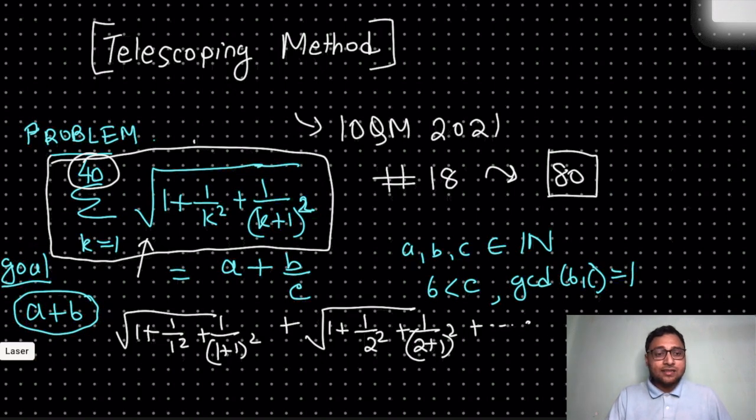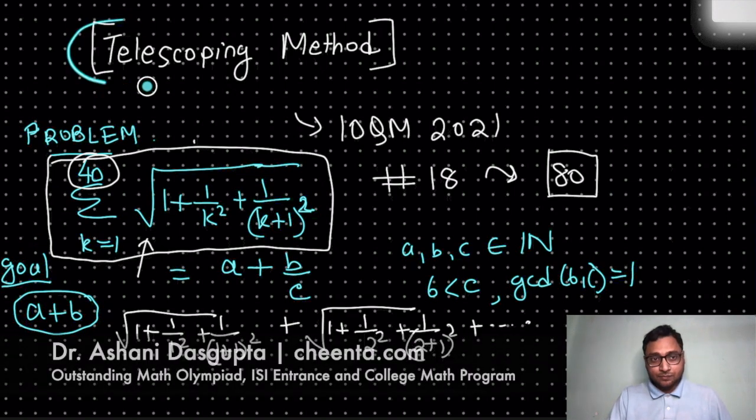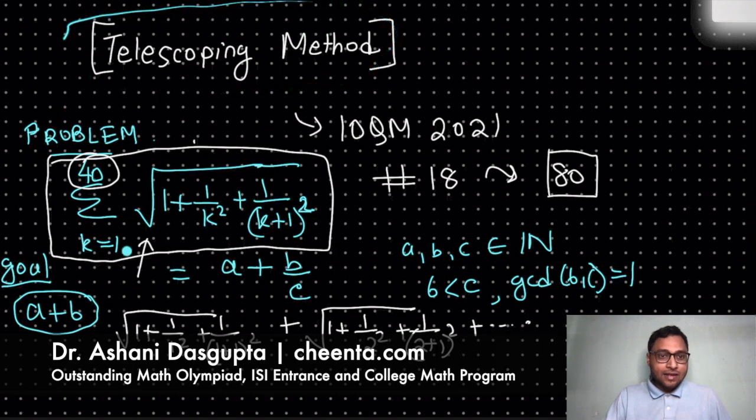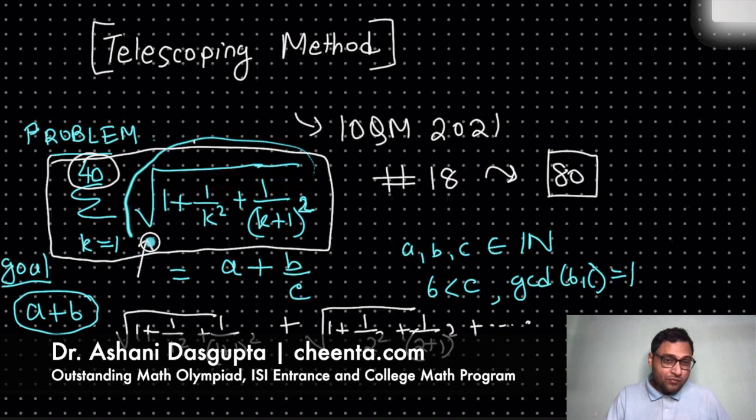So we will be using the telescoping method to solve this problem, and to do that we have to do something with the square root sign because it's kind of bothering us. We cannot split things when there is a square root. In general we cannot do that.